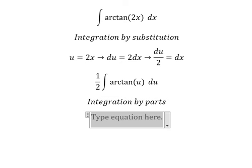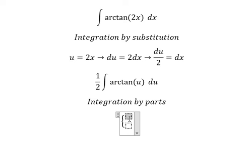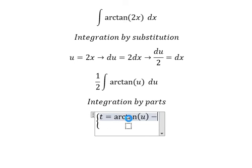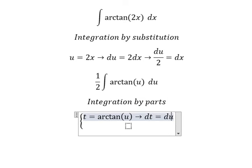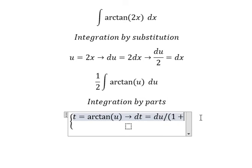I need to put t equal to arctan of u. If I do the first derivative for both sides, we have dt equals to du over 1 plus u squared.